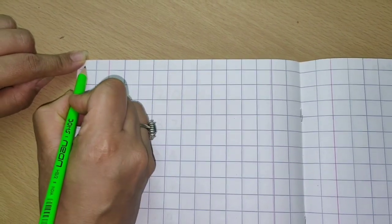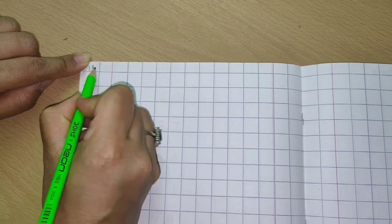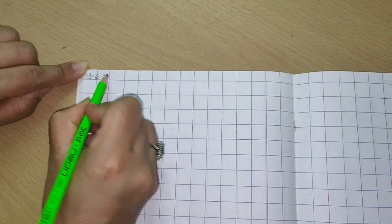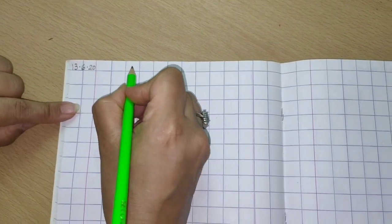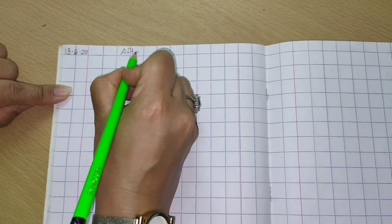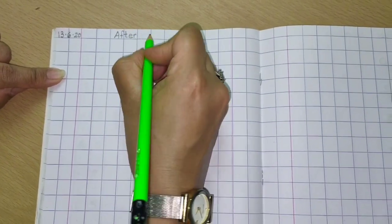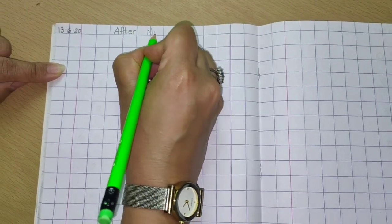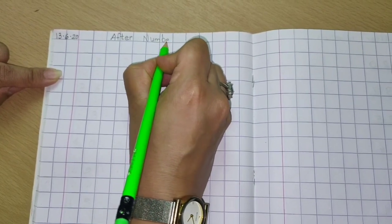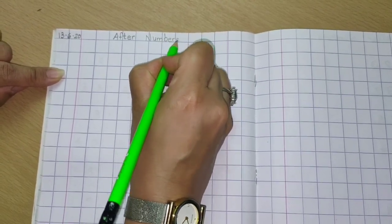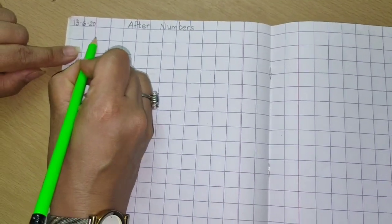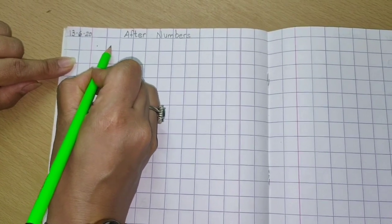Okay children, let's practice today's after numbers. First we write today's date which is 13.6.2020. Then we write After Numbers with capital A-F-T-E-R, one finger space, capital N-U-M-B-E-R-S. Then what we have to do children? Yes, after the margin line you make two dots in two boxes.